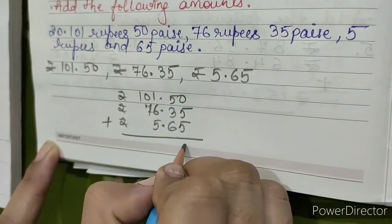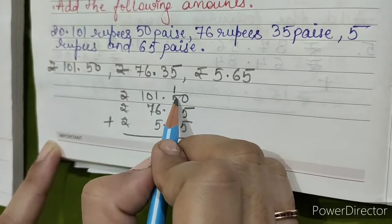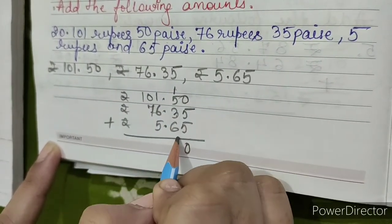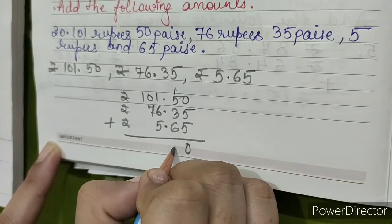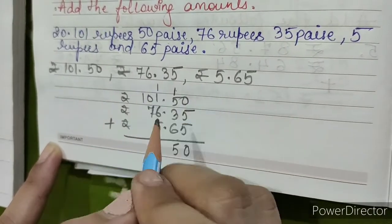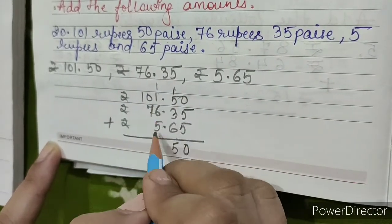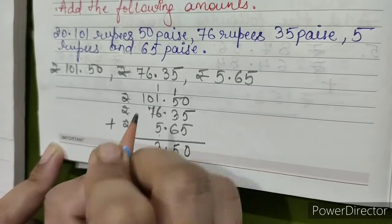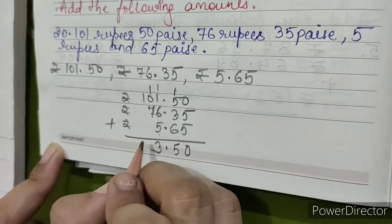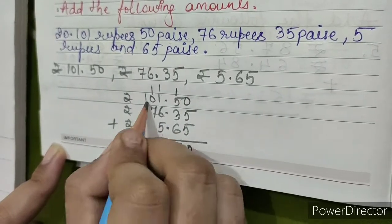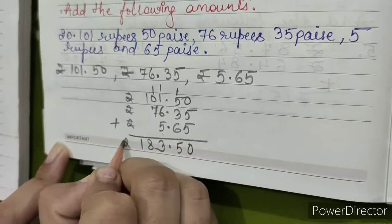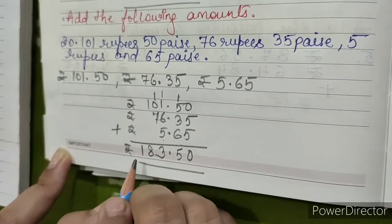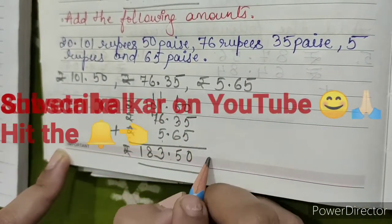5 plus 5 equals 10, write 0 carry 1. 5 plus 1 plus 3 plus 6 is 15, write 5 carry 1. 2 plus 6 plus 5 is 13, write 3 carry 1. 7 plus 1 equals 8, and we'll write 1 as it is. So our answer is rupees 183.50.